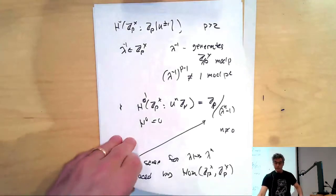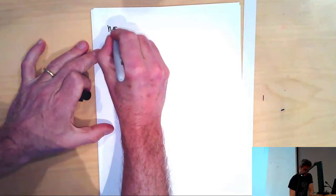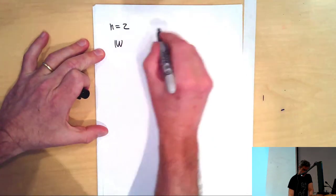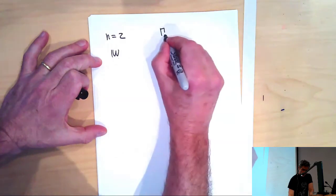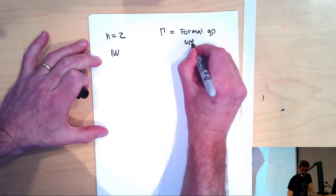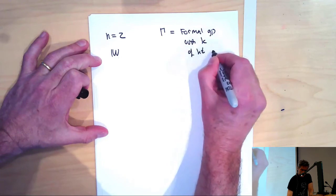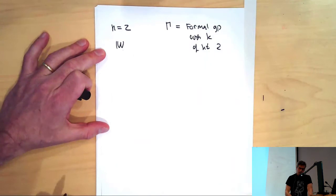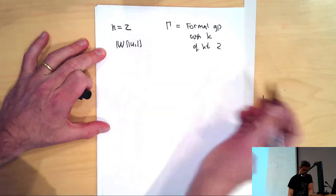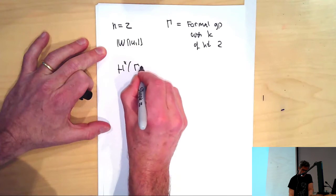Let's regard this computation as having been extraordinarily successful, and inspired by that we want to move on and try to do the case n equals 2. So we know the Lubin-Tate ring, so we want to compute — so gamma₂, gamma will be our formal group of height 2. And k will be some algebraically closed field of F_p, and W will be the Witt vectors of k, and we have this formal power series ring here. We want to figure out what is the cohomology of Aut(gamma) acting on this.